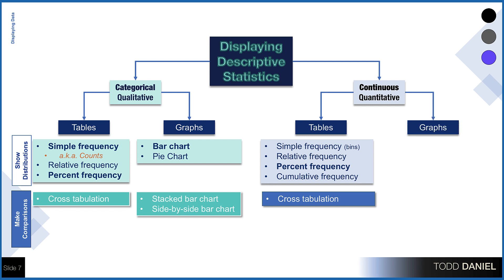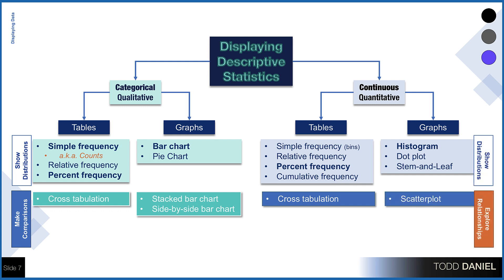Now the options for graphs include histogram, dot plot, and the stem and leaf plot. When exploring the relationship between two continuous variables, we can use a scatter plot, which is part of a correlation design. And finally, when we use Excel to display simple frequency, we will use the COUNTIF function to get the simple frequency for categorical data. But we will use a pivot table to bin the data for simple frequency using a quantitative variable.